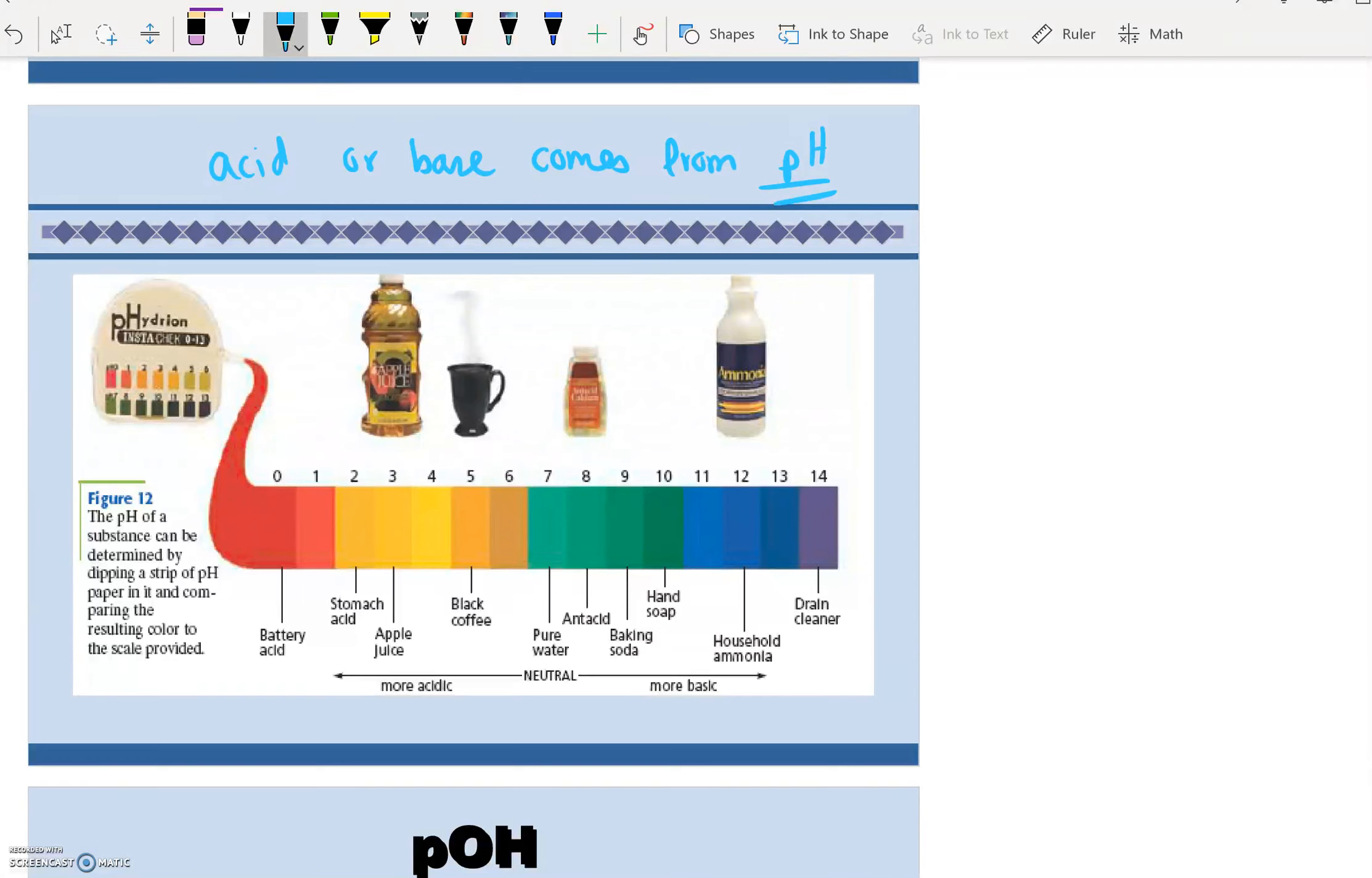So a lot of the substances that you come across on a daily basis are acids and bases. Your stomach acid has a pH of 2. Drain cleaner has a pH of 14. Black coffee is acidic. Apple juice is acidic.